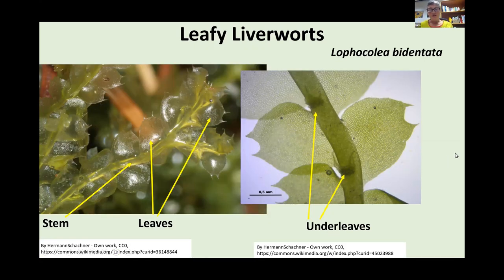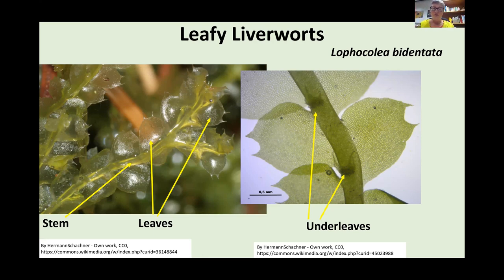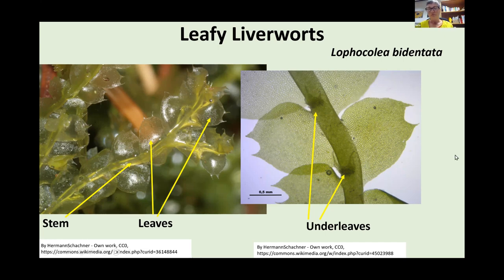Moving on to leafy liverworts. You can see the difference from the thalloid liverworts we've looked at so far — leafy liverworts definitely have a stem running down the middle, and then leaves either side of the stem. In the case of this species, the very common Frullania dilatata, you also have underleaves attached to the back of the stem — the part closest to the substrate. The shape of the underleaf is very different from the main leaves, and this is a feature that happens very often with leafy liverworts.